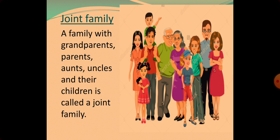The third type of family is joint family. Joint family is a family with grandparents, parents, aunts, uncles, and their children, all together living in a single house. It is called a joint family.